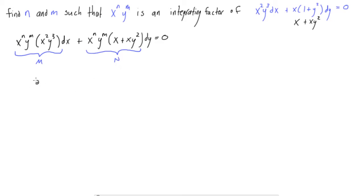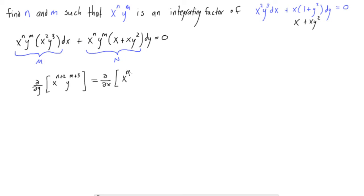We know that if it is exact, the partial derivative of M with respect to y will equal the partial derivative of N with respect to x. So we can write: d/dy of M — simplifying M, we have x to the power of n+2 times y to the power of m+3 — equals d/dx of N. Distributing through, N gives us x to the n+1 times y to the m, plus x to the n+1 times y to the m+2.